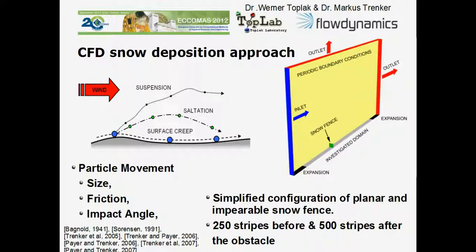Here is the snow deposition approach. First attempts and investigations were made by Begnauld in 1941. Sorensen developed this approach further, and the team around Markus Trenker and Wolfgang Payer at the Austrian Institute of Technology made several studies as already shown. It's about particle movement, which is a function of size, friction and impact angle. Light particles exposed to wind show suspension — they fly away and leave the ground. Medium sized particles show saltation behavior, and large particles show surface creep.